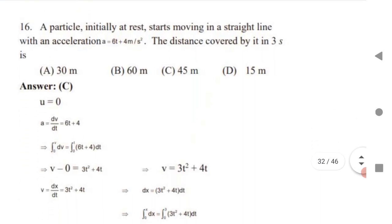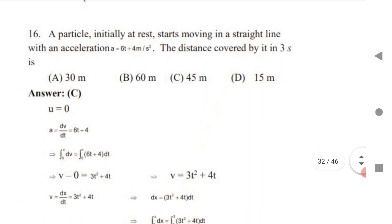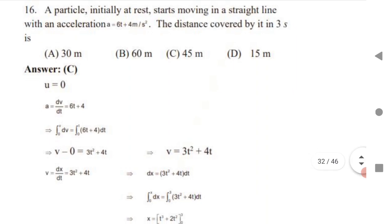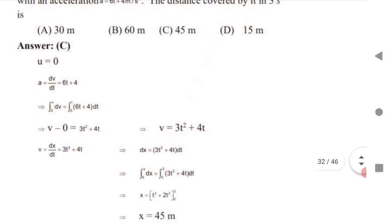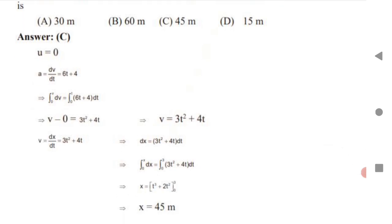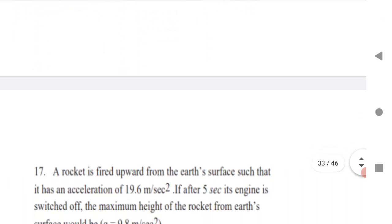Next: a particle initially at rest starts moving in a straight line with a given acceleration. Find the distance covered. Use a = dv/dt to get v, then since v = dx/dt, cross-multiply to get dx = v dt, and integrate both sides to obtain the expression for x.